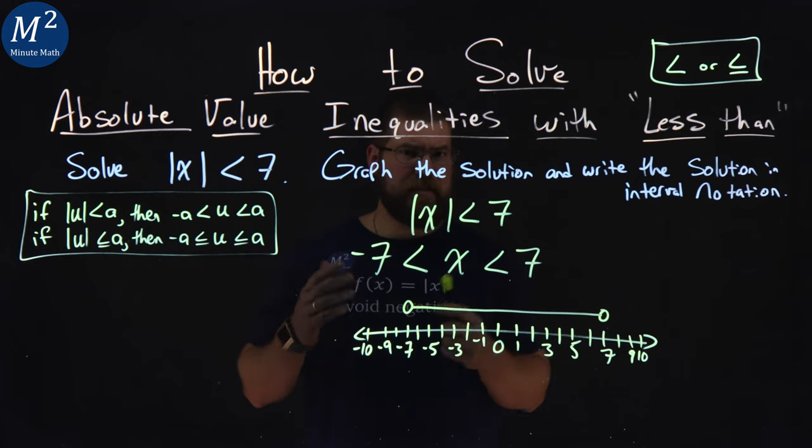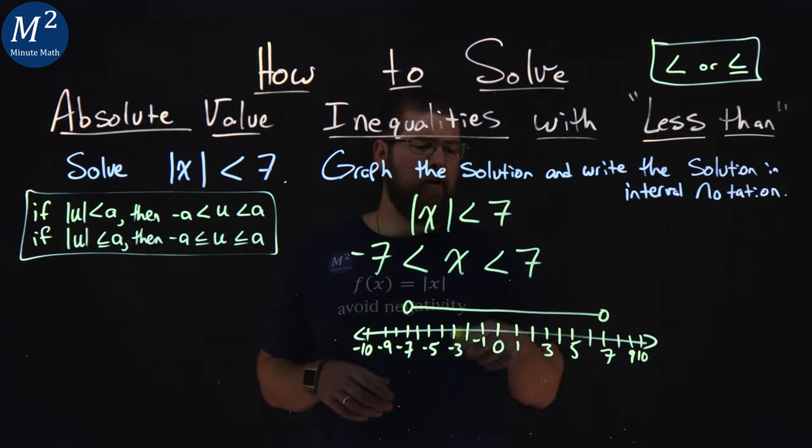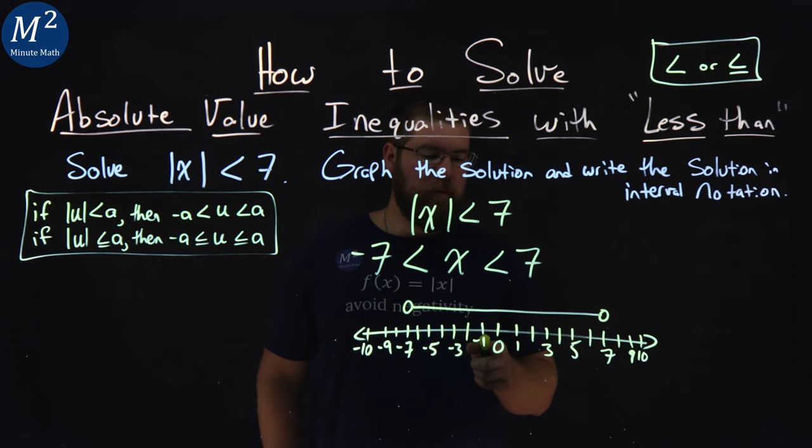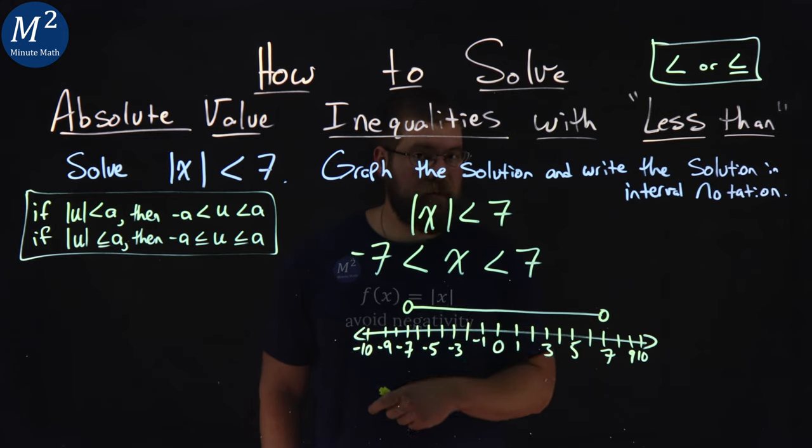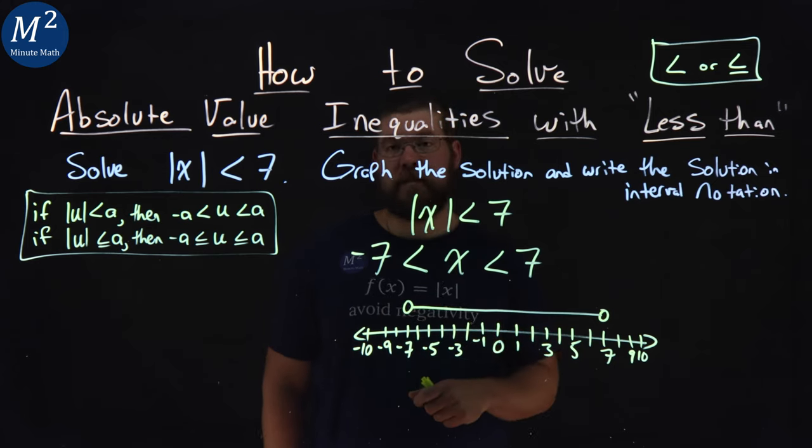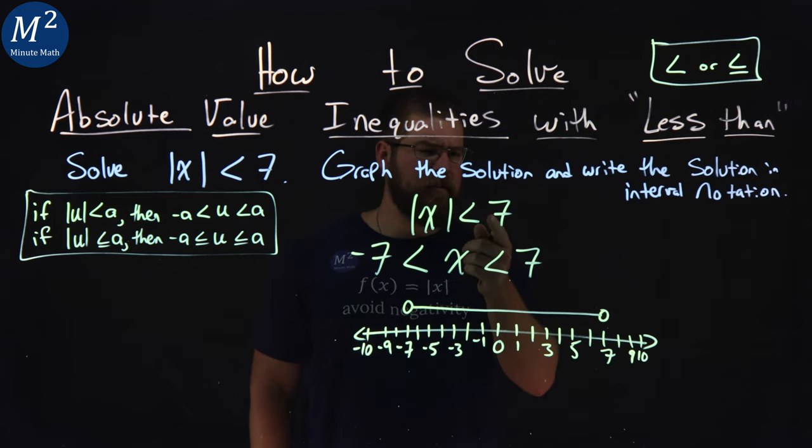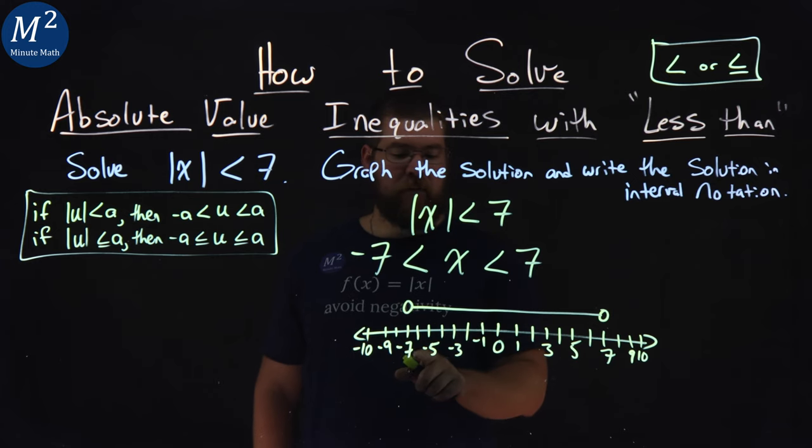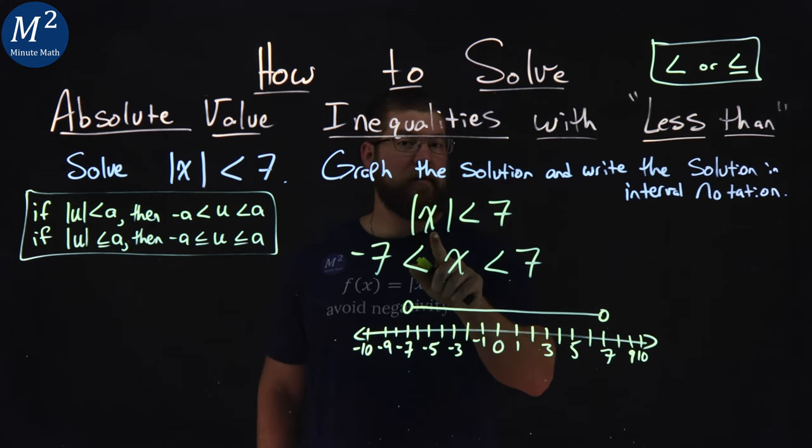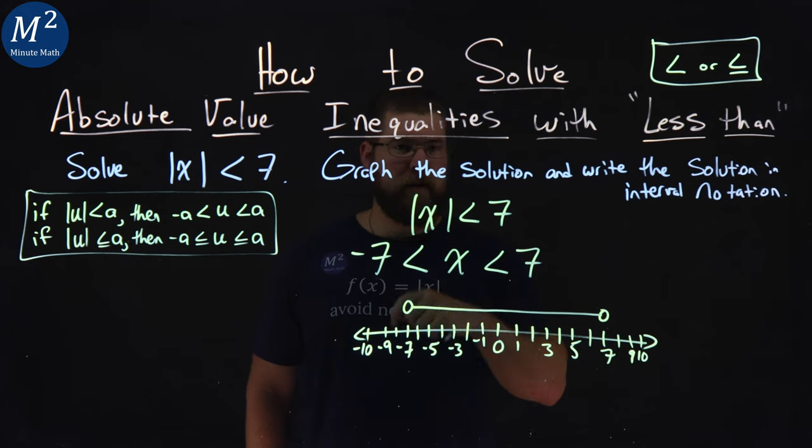Now notice, we said we're going to test this really quickly. This represents all values that x can be. If we plug 0 in for x, absolute value of 0 is 0, and that is still less than 7. Positive 5 in for x there. Absolute value of 5 is 5, is still less than 7. Absolute value of negative 5, same thing. Absolute value of negative 5 is a positive 5, which is still less than 7.